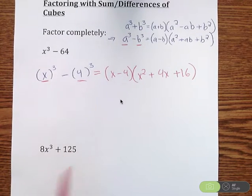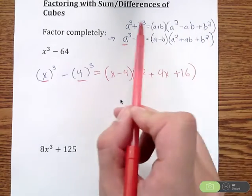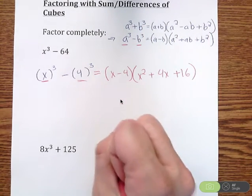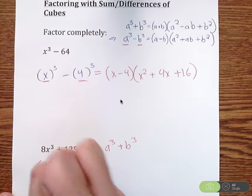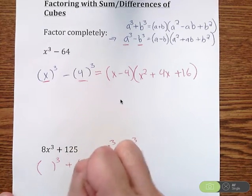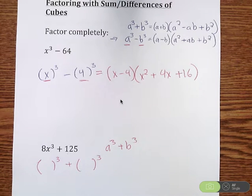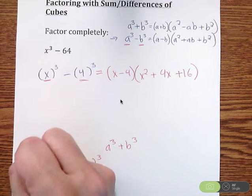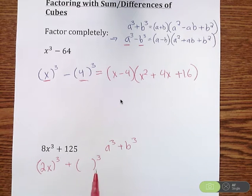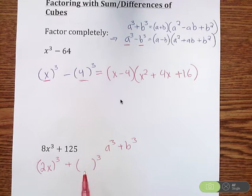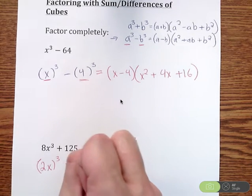Now I'm going to do one more — the sum of cubes. I know I'll be using the top formula, but first I want to rewrite it in the form a cubed plus b cubed, so I need to figure out what a and b are. I need to find what to the third power gives me 8x cubed, and what to the third power gives me 125. Starting with the 8: 2 to the third power is 8, and x to the third is x, so a equals 2x. For 125, trying 5 to the third power — that's 125, so b equals 5.